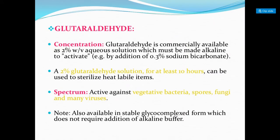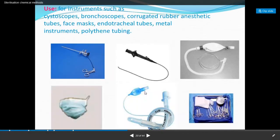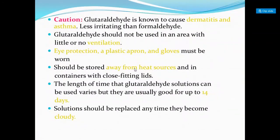The next aldehyde is glutaraldehyde, commercially available as a 2% w/v solution. It must be made alkaline to activate by adding 0.3% sodium bicarbonate. Two percent glutaraldehyde solution used for at least 10 hours can sterilize heat-sensitive instruments. It is active against vegetative bacteria, spores, fungi, and various viruses. Glutaraldehyde is used for sterilizing stethoscopes, bronchoscopes, corrugated rubber anesthetic tubes, face masks, endotracheal tubes, metal instruments, and polythene tubing.